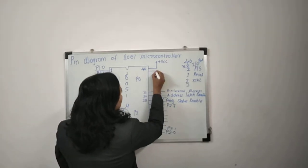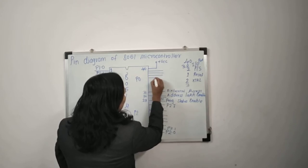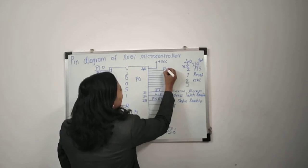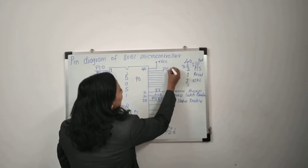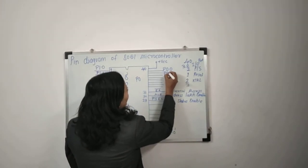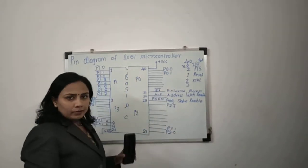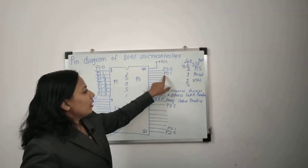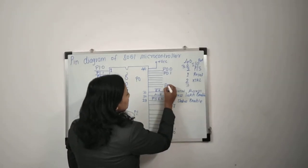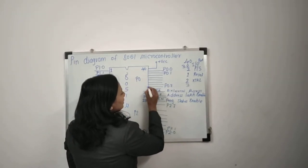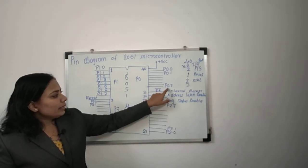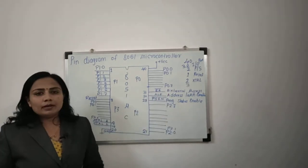Port 0 also has 8 pins. The first pin is labeled P0.0, the next is P0.1 — meaning port 0, pin number 1 — and the last pin is P0.7, meaning port 0, pin number 7.